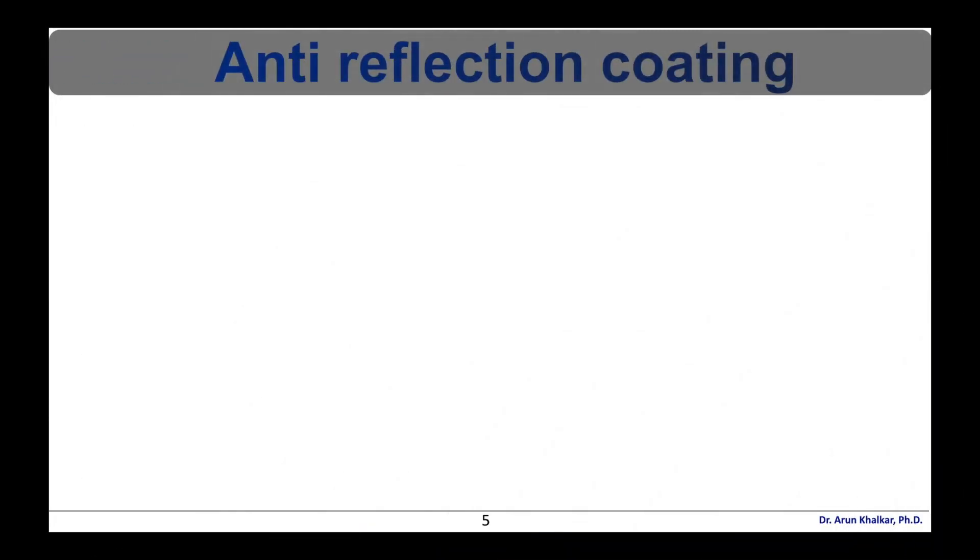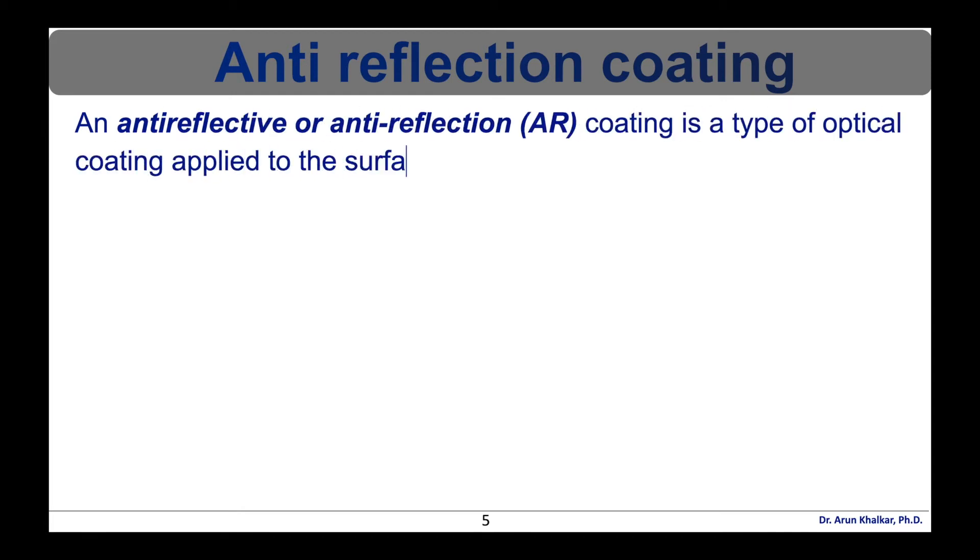Now let's see second application of interference that is anti-reflection coating. An anti-reflective or anti-reflection coating is a type of optical coating applied to the surface of lenses and other optical elements to reduce reflection. In typical imaging system, this improves the efficiency since less light is lost due to reflection. In complex systems such as telescopes and microscopes, the reduction in reflections also improves the contrast of the image by illumination of stray light. This is especially important in planetary astronomy.